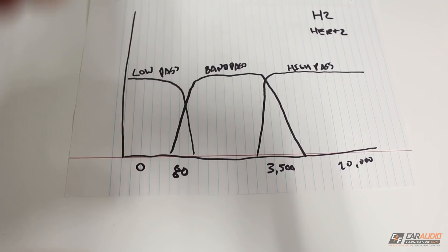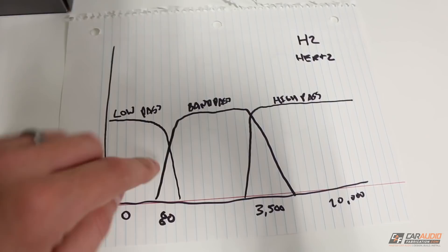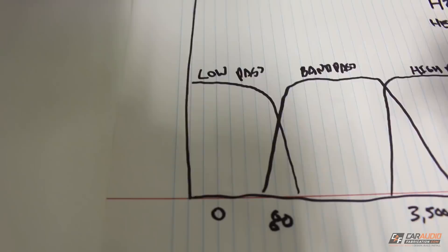Another term that relates to crossovers is roll off. Roll off is basically how quickly these frequencies are going to fall off. So with a low pass crossover at 80 Hertz, how quickly is that drop off going to be? Are you going to be able to hear stuff at 100 Hertz still, or is it going to be much more quiet? In other words, this would be a pretty steep slope roll off, whereas this would be not as steep.